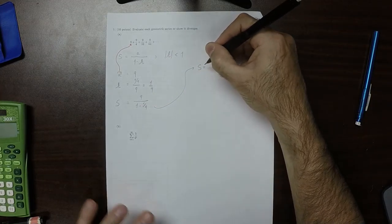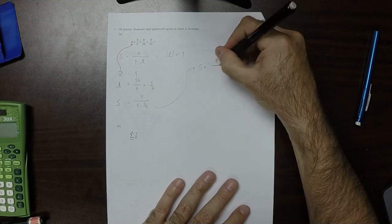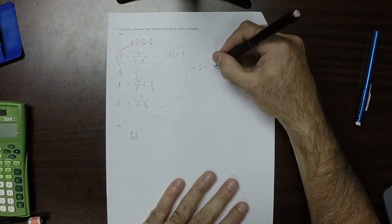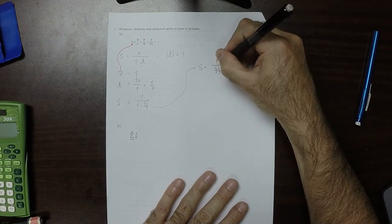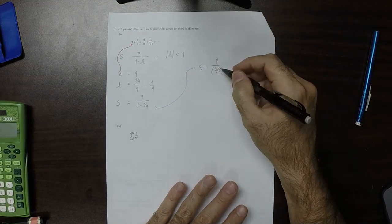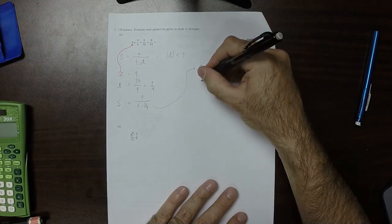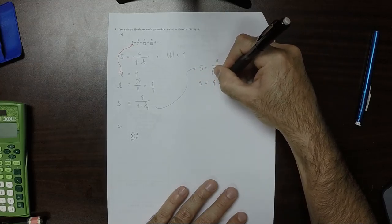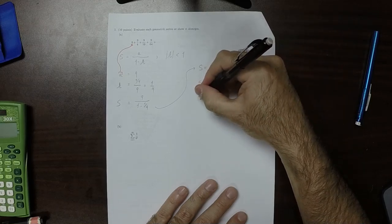So the sum is 9 divided by, well, that's 4 fourths minus 1 fourth is 3 fourths. So that's the same as multiplication by 4 thirds. 9 over 3 is 3 times 4 is 12.